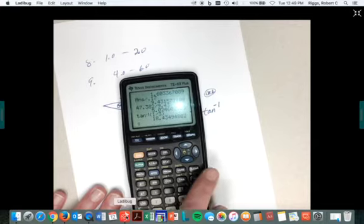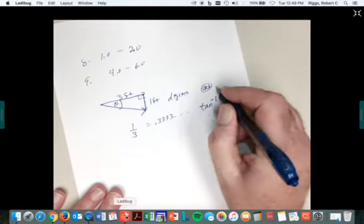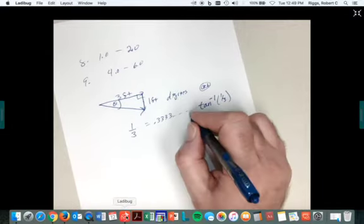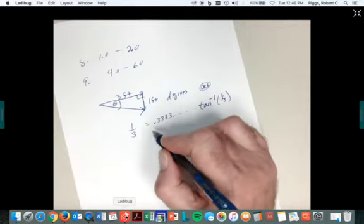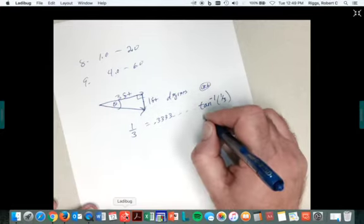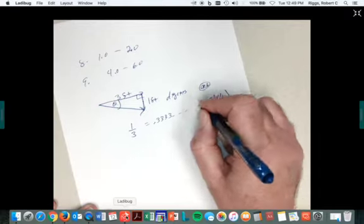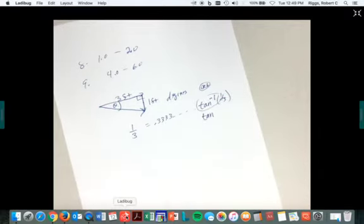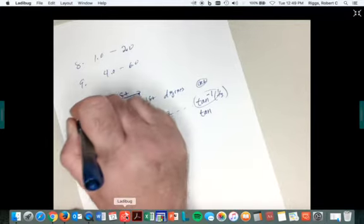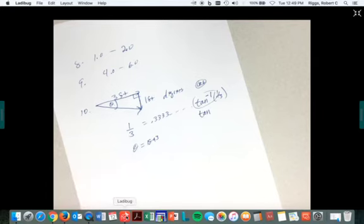So, worst comes to worst. On the older calculators, you take one divided by three and then just hit that inverse tangent key. It'll be above the tan key. It's on the same thing. But it'll be written in like yellow or something like that. So you've got to hit your second operation. But you already know what the angle is. Now we're going to have fun with that 18.43 degrees.